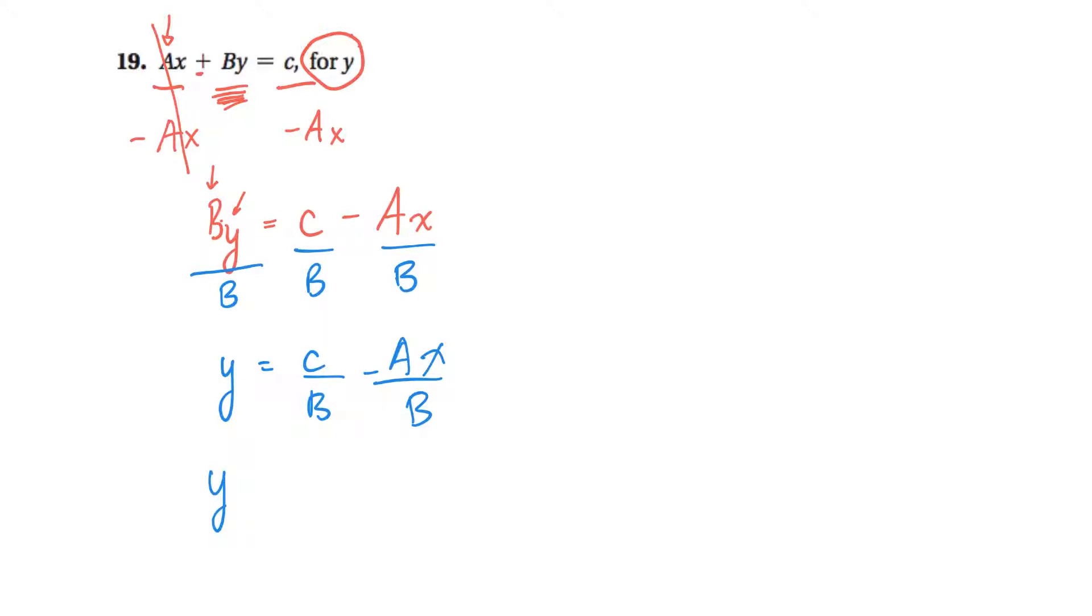Then you could leave it like that. I would mark that correct. But since they both have the same denominator, you could write it as c minus ax all over the same b. Both those answers would be correct.